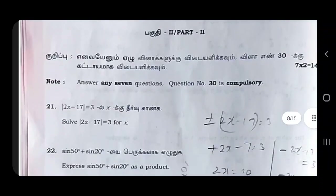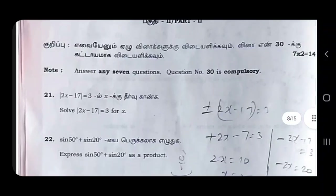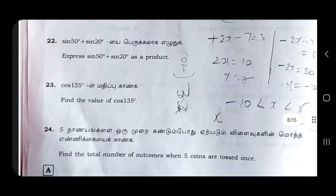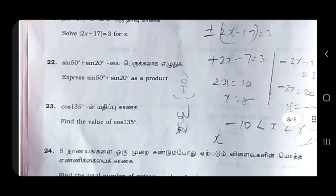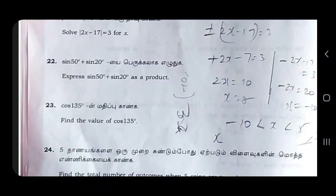If you look at the 2-mark section, you will see the first answer here: x equals 5 and x equals minus 2. The modulus is 4 plus or minus. And sin 50 plus sin 20 — what you call sum to product — express as a product. The sum to product formula is here.